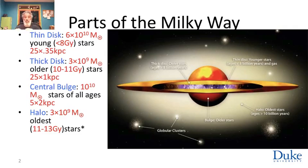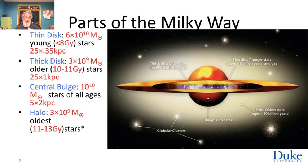Surrounding the disk and bulge is the halo, in which, for example, one finds the globular clusters orbiting. These stars are not stationary — they orbit in orbits with high inclination to the galactic plane. Some of them may at any given time be inside the disk, but they are distinguished because their velocity would then be roughly perpendicular to the direction of motion of the disk stars. The mass of the halo stars is very small — only about 3 billion solar masses.